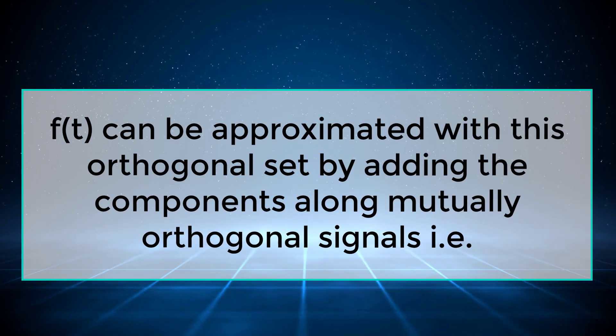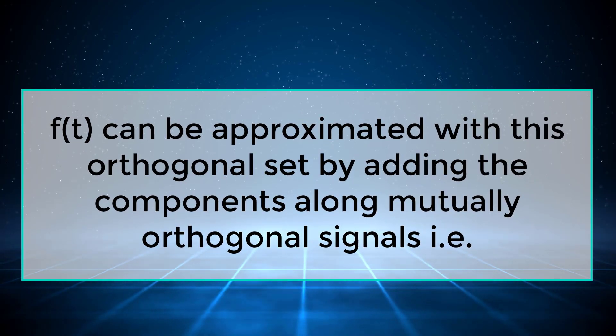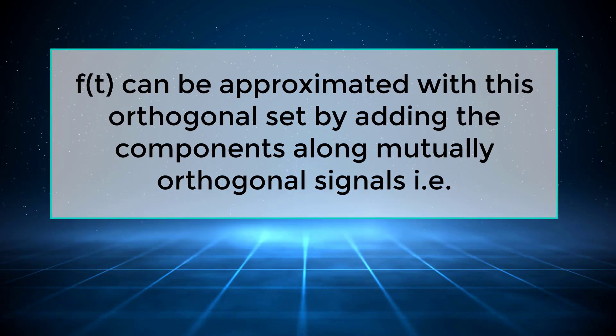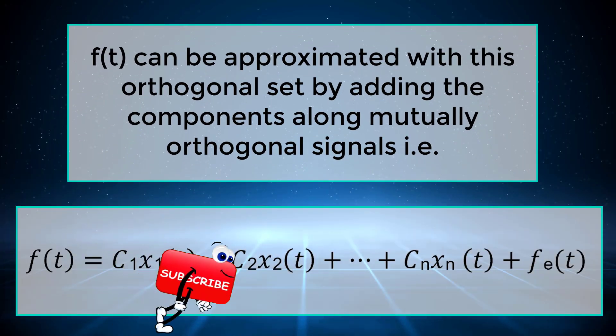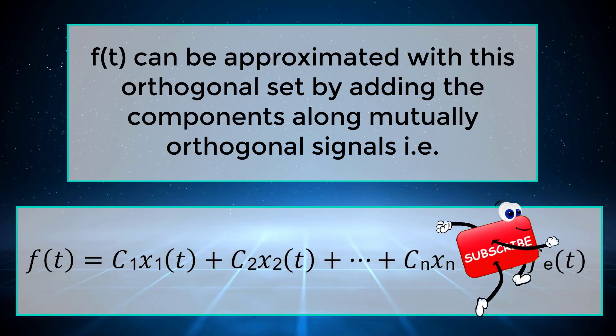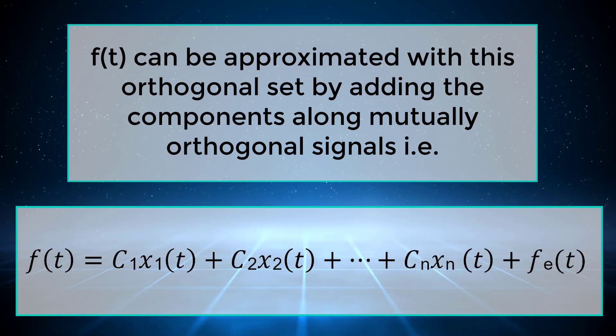f(t) can be approximated with this orthogonal set by adding the components along mutually orthogonal signals, i.e., f(t) equals C1x1(t) + C2x2(t) + ... + Cnxn(t) + fe(t).